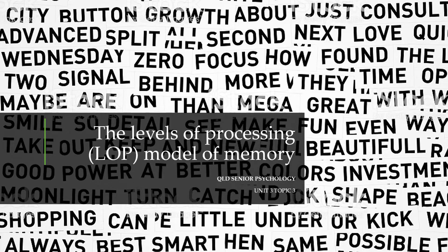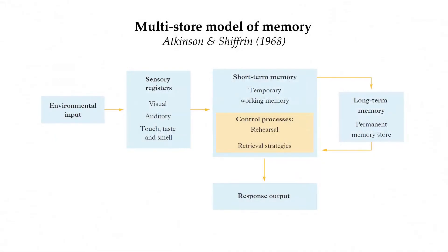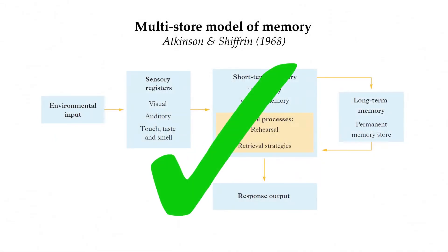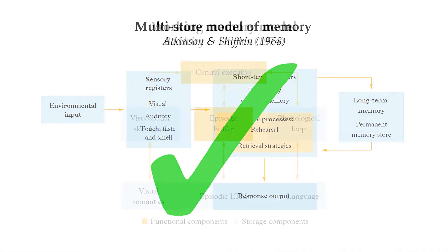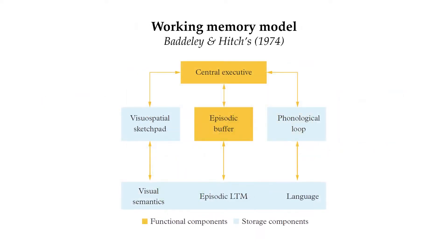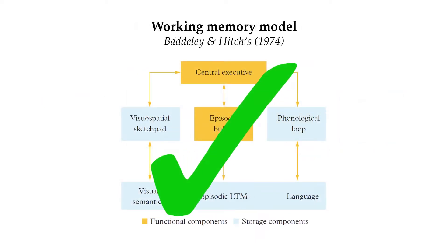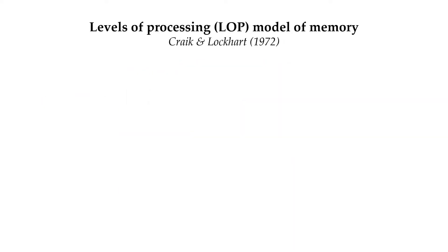If you remember what I've covered in previous lessons, then you would know that there are various ways that we understand how memory works. We discussed the multi-store model of memory by Atkinson and Shiffrin, the working memory model by Baddeley and Hitch, and in this lesson, we're looking at the levels of processing model of memory by Craik and Lockhart.